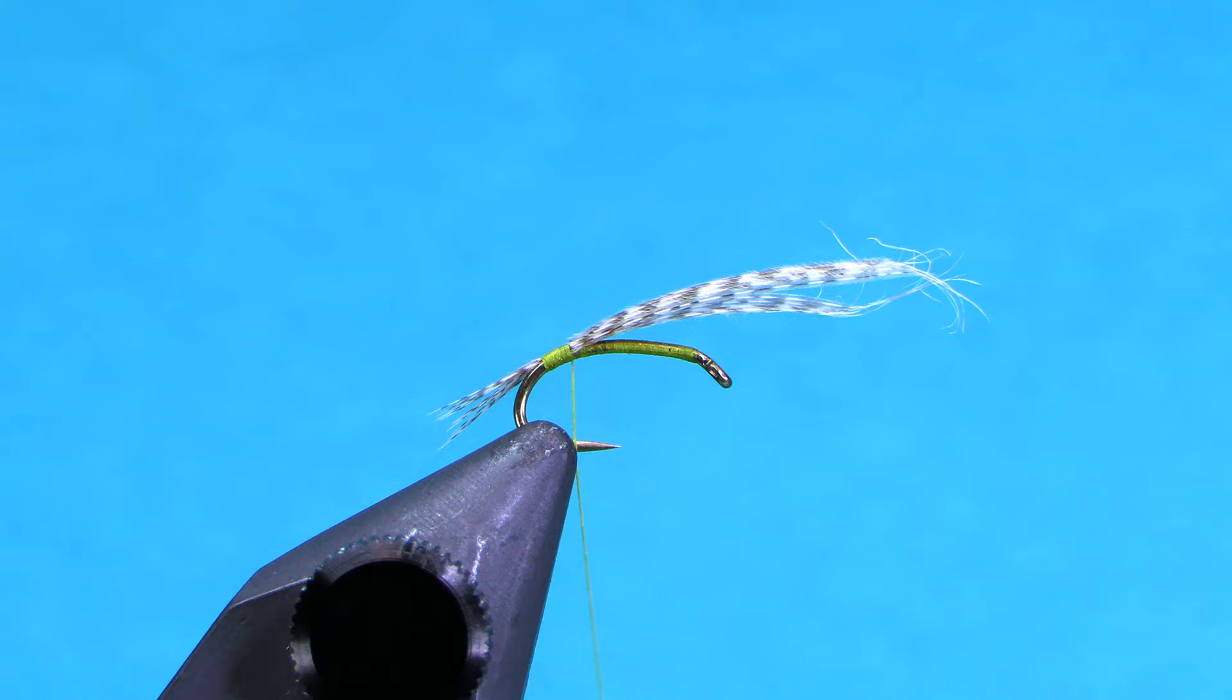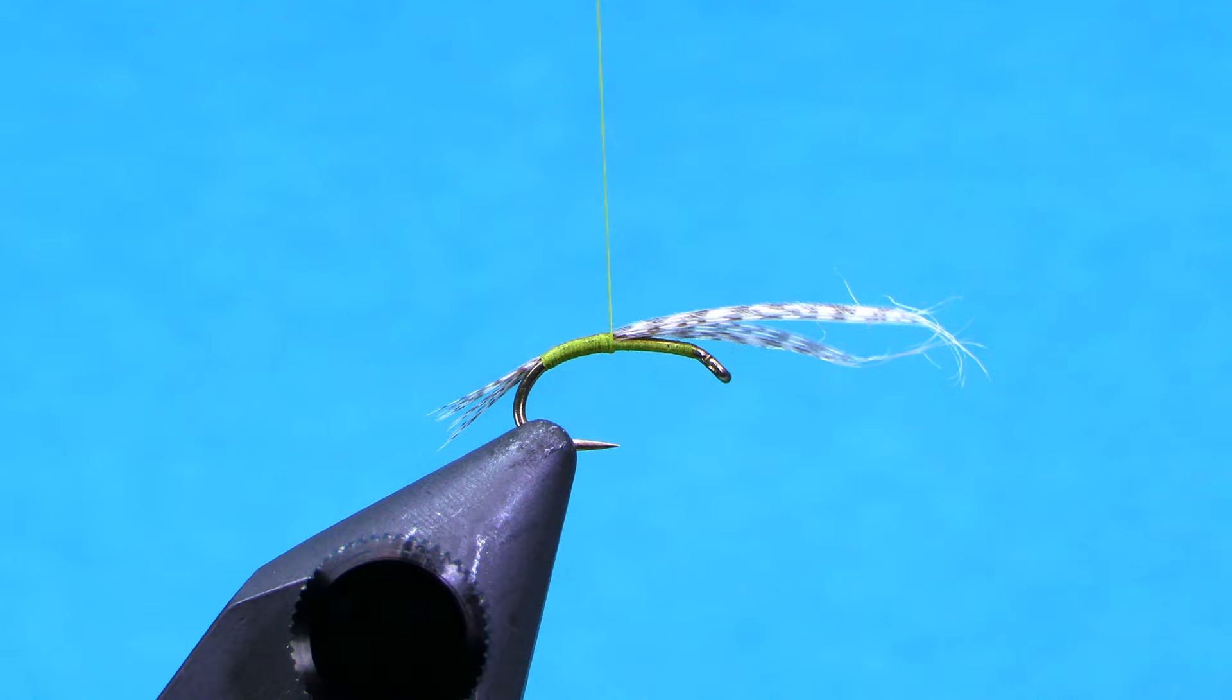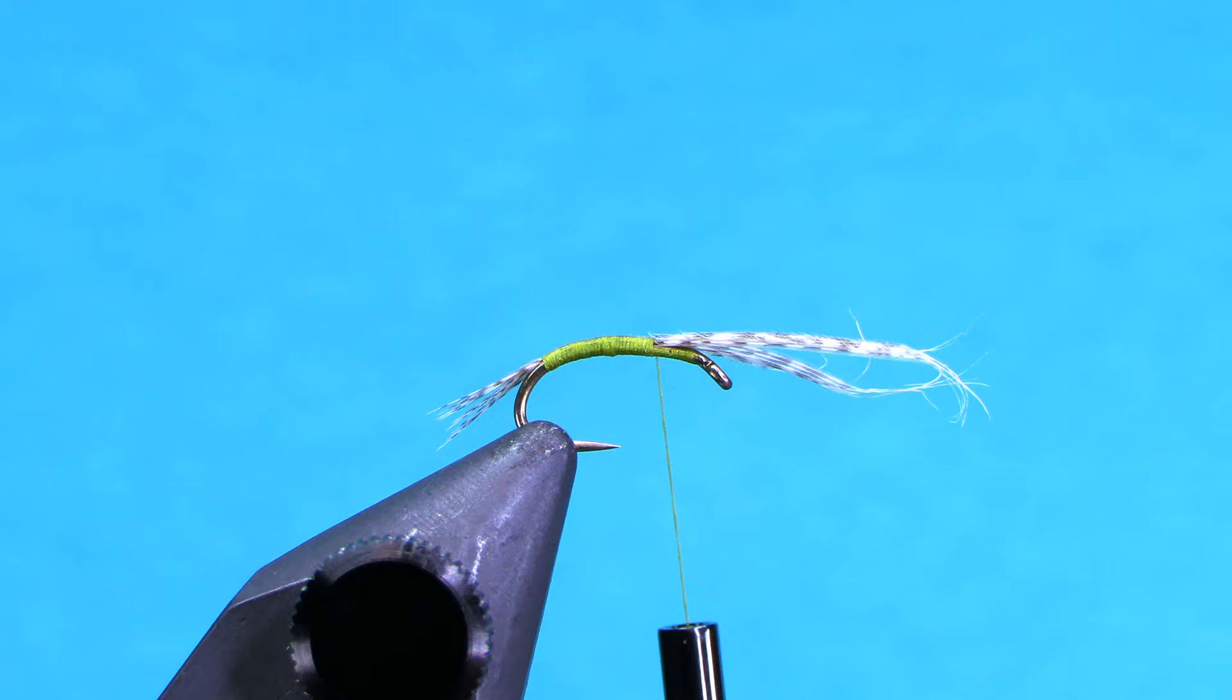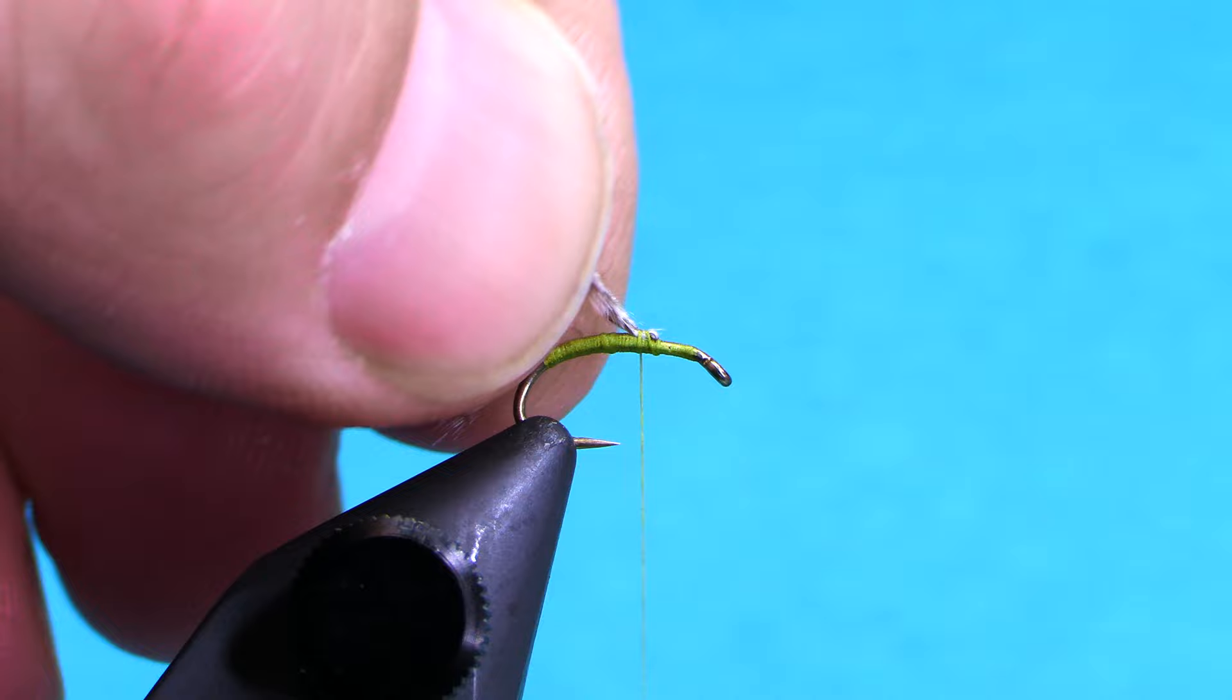Now we're going to take our thread and just using nice tight wraps, cover up the mallard as we go forward. And as we get kind of three quarters of the way to the front of the hook, we'll take our mallard, we'll fold it back and kind of tie it back so it can become our wing case.